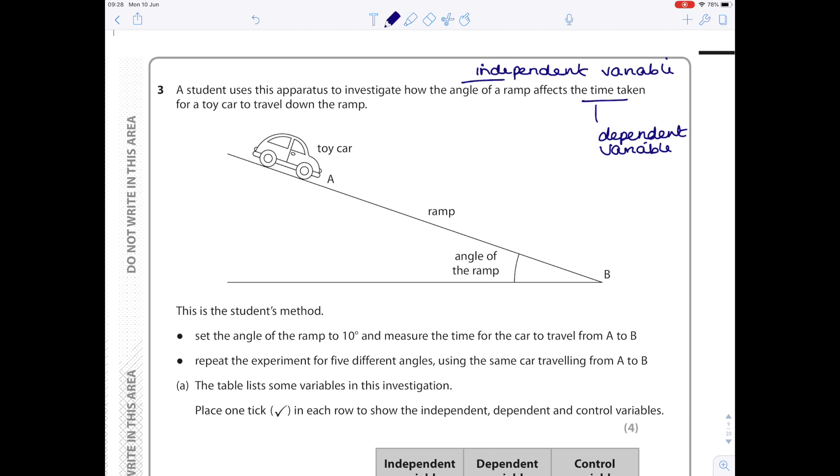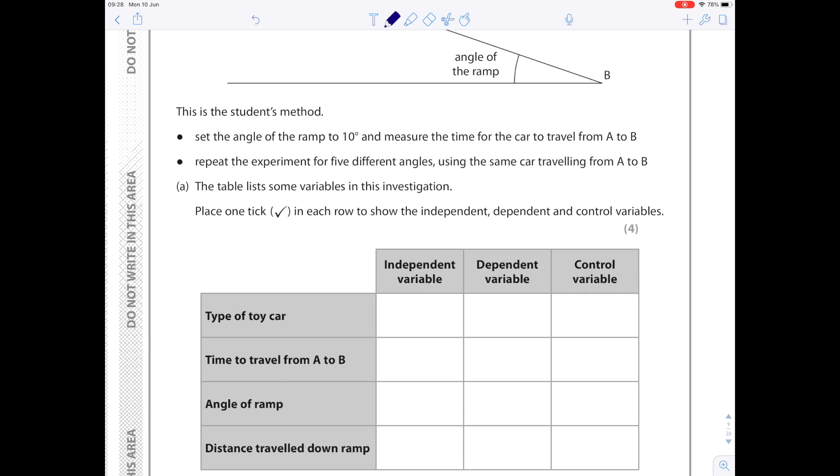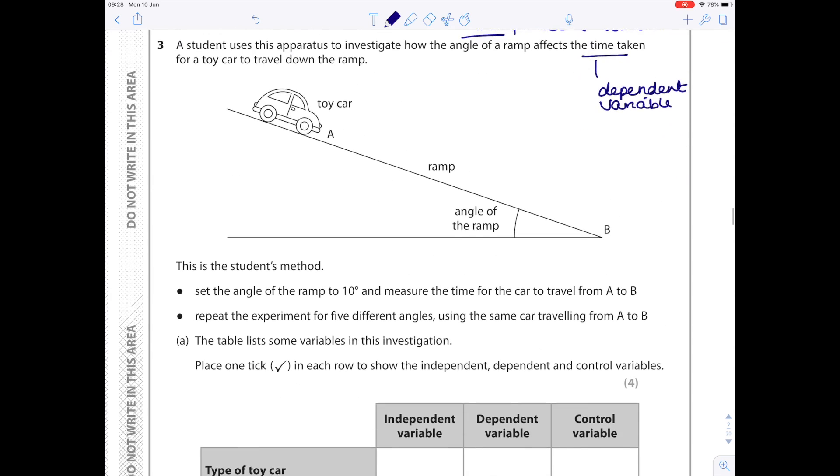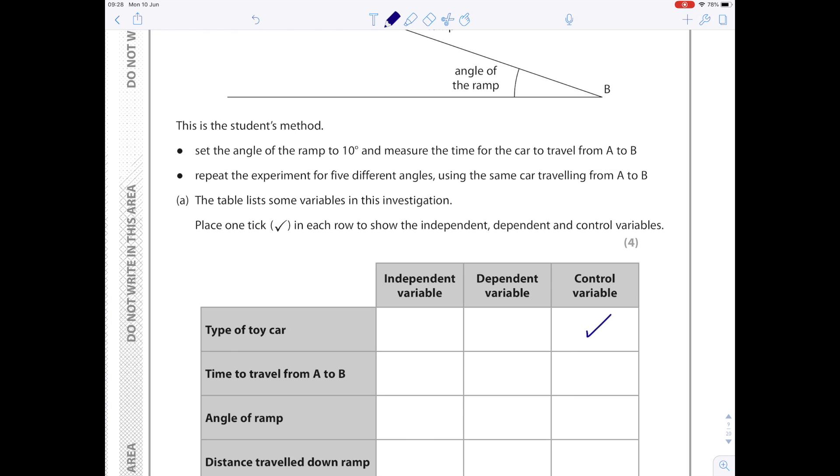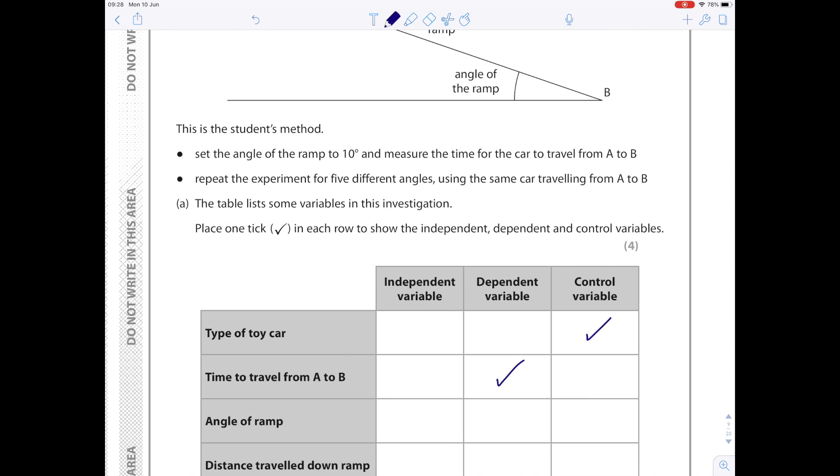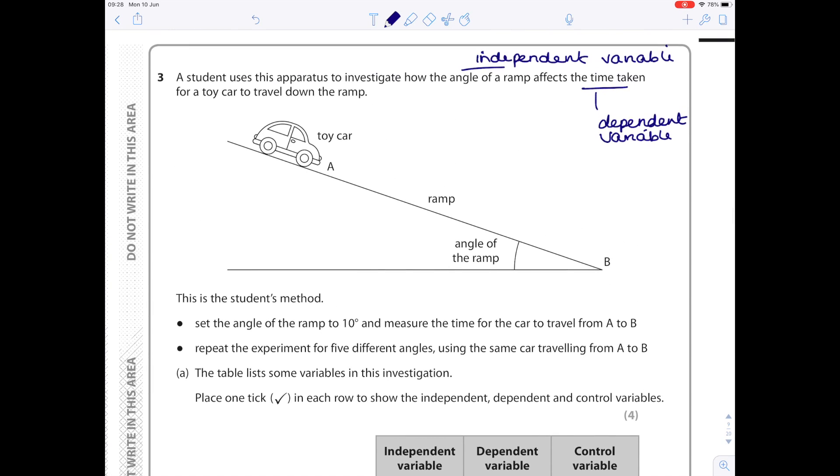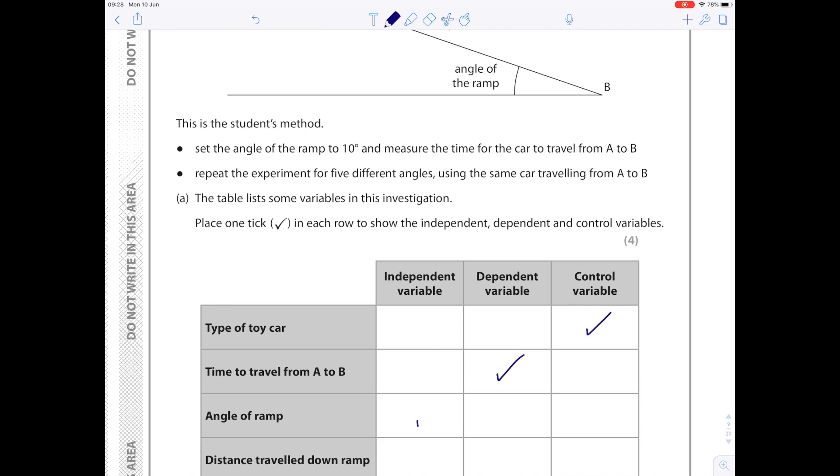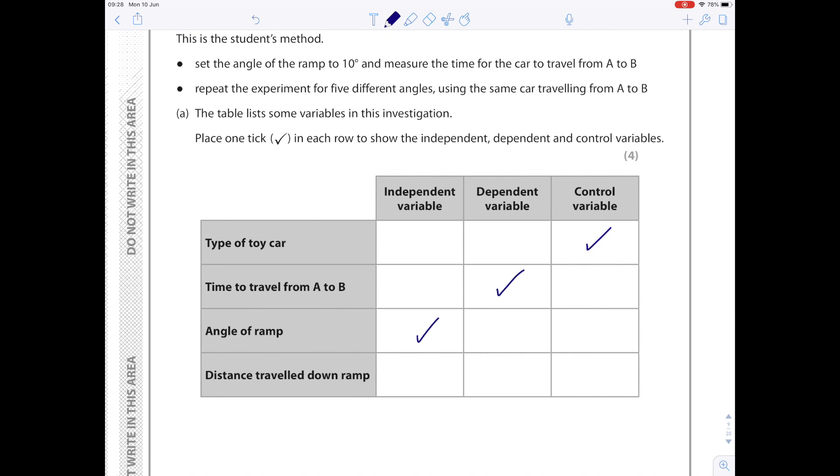This is the student's method: set the angle of the ramp to 10 degrees and measure the time for the car to travel from A to B. Repeat the experiment at five different angles using the same car traveling from A to B. The table lists variables in this investigation. Place one tick in each row to show the independent, dependent, and control variables. Type of toy car is a control variable. Time taken to travel from A to B is the dependent variable. The angle of the ramp is the independent variable. The distance traveled down the ramp is the control variable.